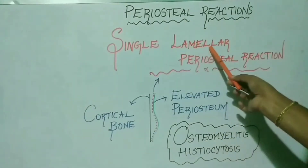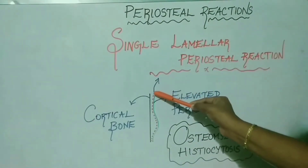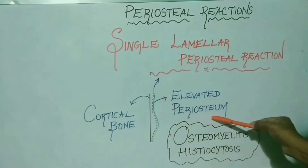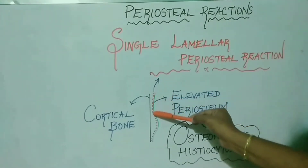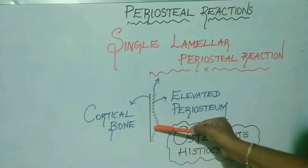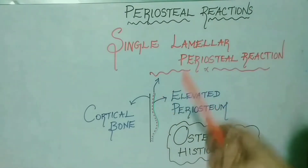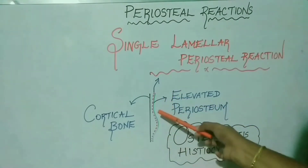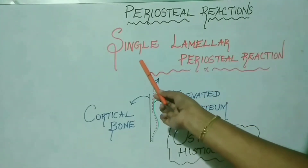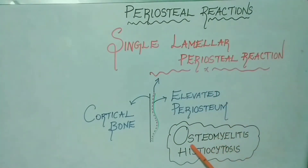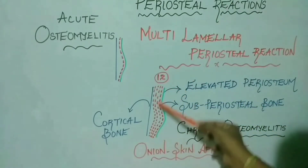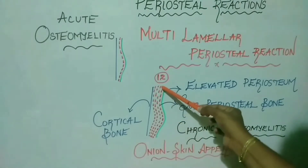In single lamellar periosteal reaction, a single layer of bone is deposited just beneath the periosteum. The green color line represents the elevated periosteum, and just below it is a red dotted line representing the deposited subperiosteal bone. This subperiosteal bone is very thin — about one to two millimeters in width — and is seen radiographically as a faint radio-opaque line. Best examples include osteomyelitis and histiocytosis.